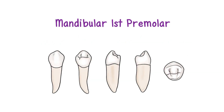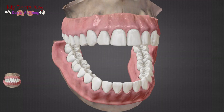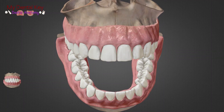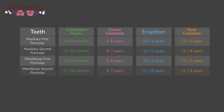In this video, we will be covering mandibular first premolars, known as number 21 and number 28 in the universal numbering system. We will be looking at tooth number 28 today. Mandibular first premolars calcify when a child is 18 to 24 months of age, complete their crowns when a child is 5 to 6 years old, erupt when a child is 10 to 12 years of age, and complete their roots at 12 to 13 years old. Of all the premolars, the mandibular first premolar is the smallest premolar.